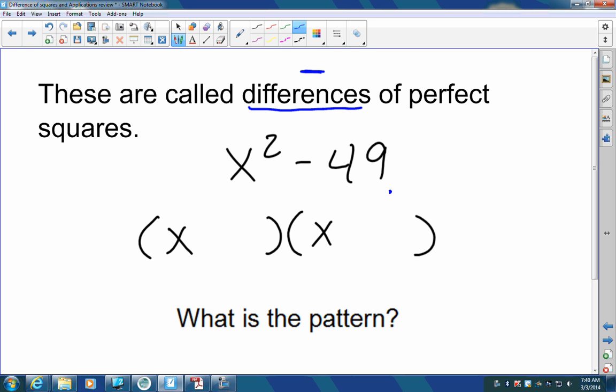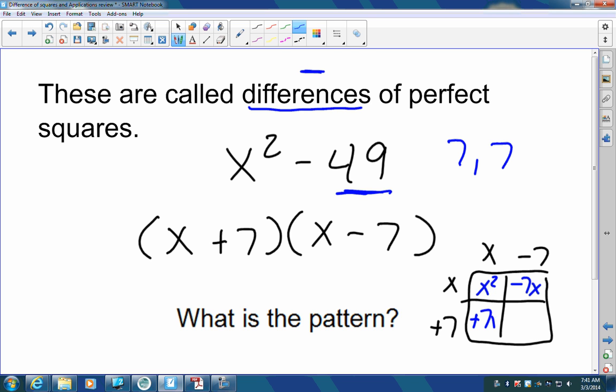Now, 49, what two numbers multiply together to give you 49? The same number. 7 and 7, right? So a perfect square is when you see something like this and no middle term, you're going to have plus 7 and minus 7. The reason why this happens is when we multiply this together and I have x plus 7 and x minus 7.